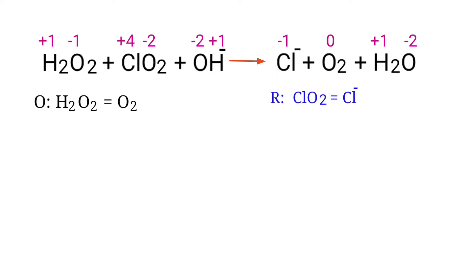Now balance the number of atoms in the two half reactions. In the oxidation half reaction, to balance the hydrogen atoms you can produce H⁺ ions. The number of atoms in the oxidation half reaction are now balanced. In the reduction half reaction, to balance the oxygen atoms you can produce water molecules.